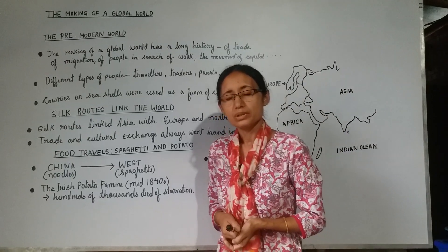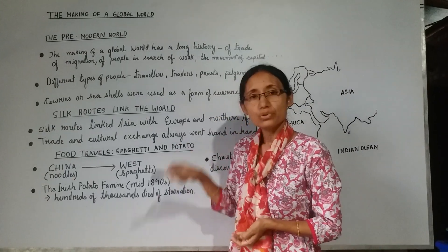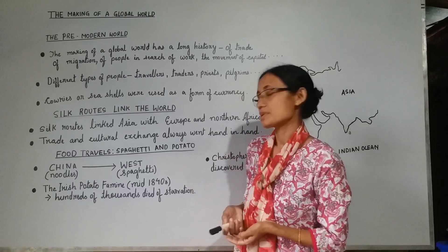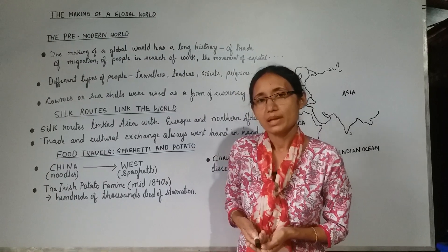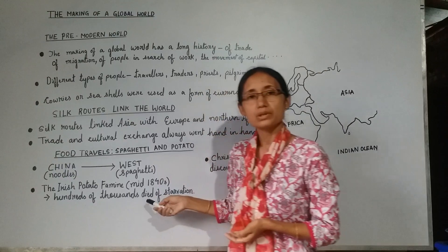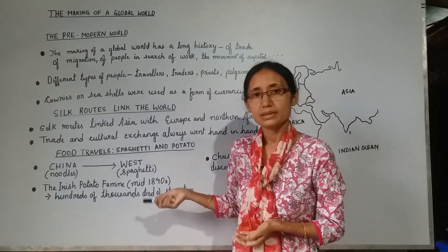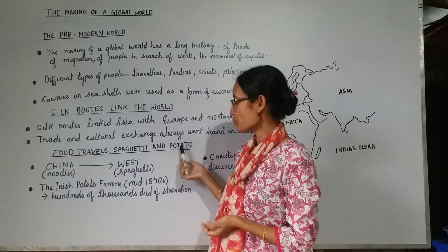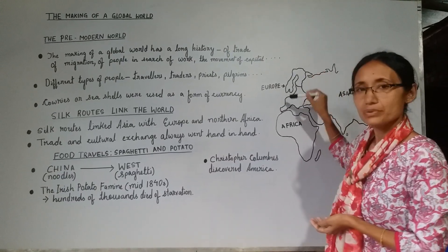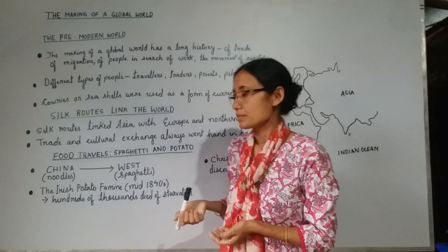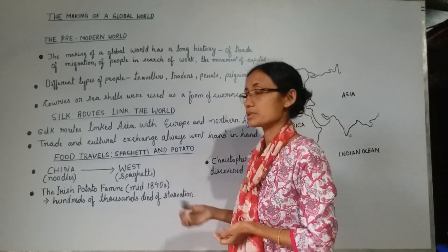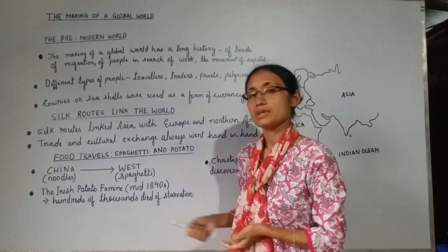Sometimes, students, do you know that a new crop after its introduction became so dependable that it could make the difference between life and death? If we study the Irish potato famine which occurred in the mid-1840s — after the introduction of potato in Europe, Ireland being a country in Europe — the poor peasants became so dependent on potato that when the famine broke out in the mid-1840s, hundreds of thousands died of starvation.